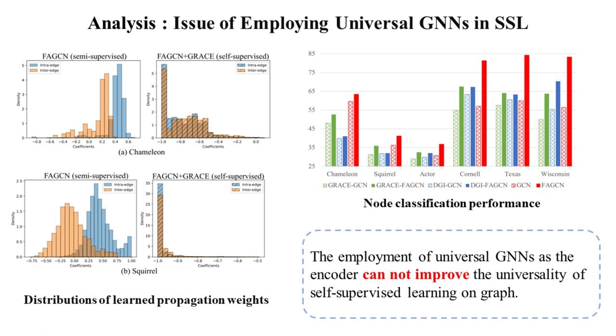Therefore, to be universal, SSL must be customized for the graph, i.e., learning the graph. However, learning the graph via universal GNNs is disabled in SSL since their distinguishability on homophilic and heterophilic edges disappears without the labels.